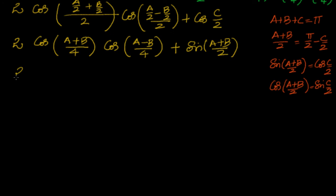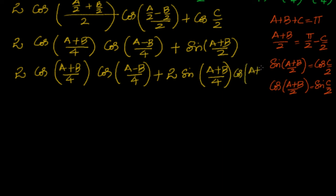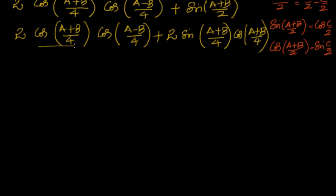So the expression becomes 2·cos((a+b)/4)·cos((a−b)/4) plus sin((a+b)/2). Using sin(2A) = 2·sin(A)·cos(A), sin((a+b)/2) = 2·sin((a+b)/4)·cos((a+b)/4). Now cos((a+b)/4) is common throughout, so we take it out: 2·cos((a+b)/4)·[cos((a−b)/4) + sin((a+b)/4)].